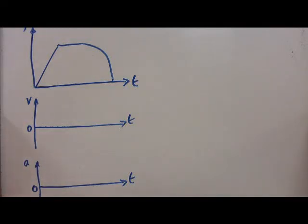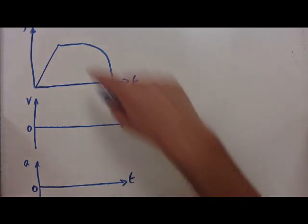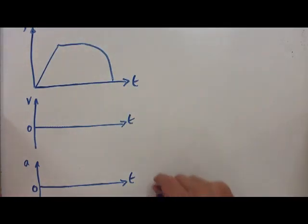Okay, how do we sketch velocity-time and acceleration-time graphs when all we're given at the beginning is a displacement-time graph such as the one up here?